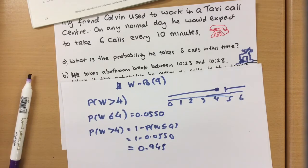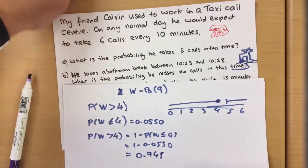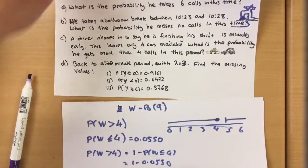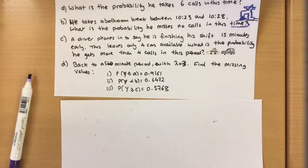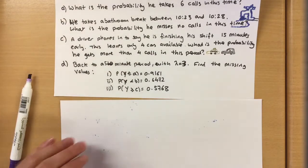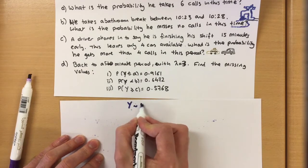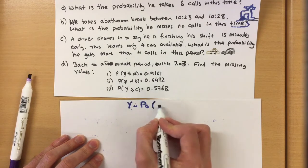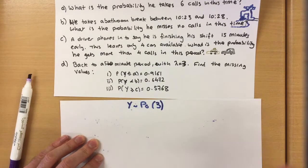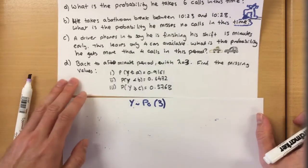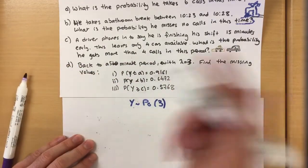He looks a little bit stuffed in that one. Okay then, now the last question, the last question down here is a little bit trickier. So going back to that five minute period, so that was our Y distribution where the Poisson had an expected value of three.